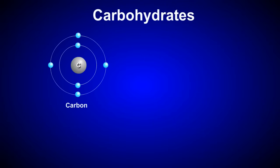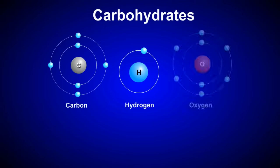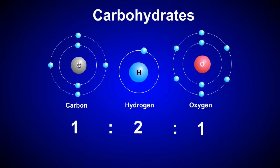Carbohydrates are biomolecules that are composed of carbon, hydrogen, and oxygen atoms in the ratio of 1 to 2 to 1. We can represent the proportion of these elements within carbohydrate molecules with the formula CH2O.